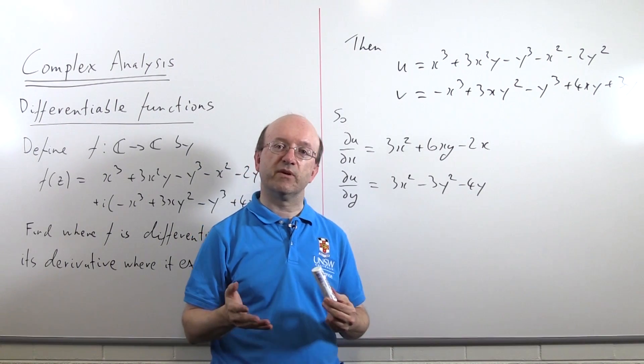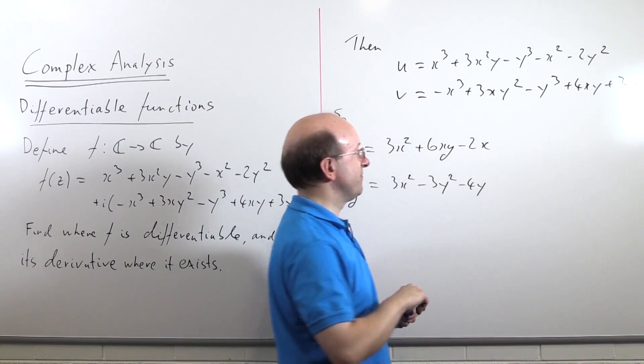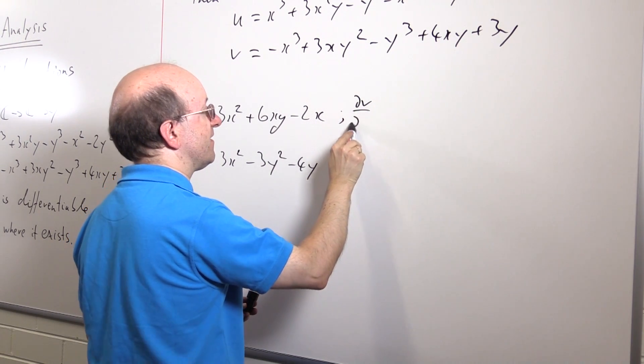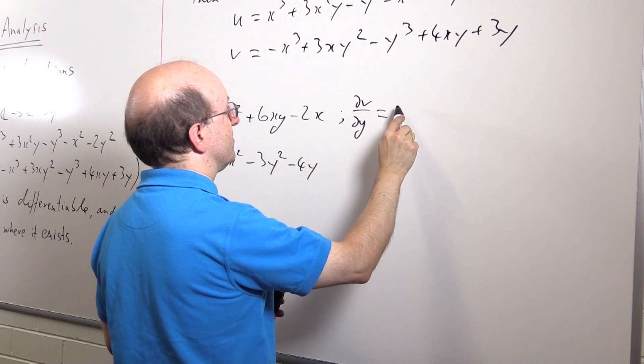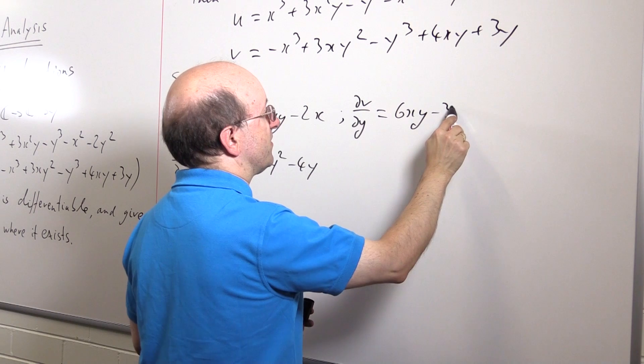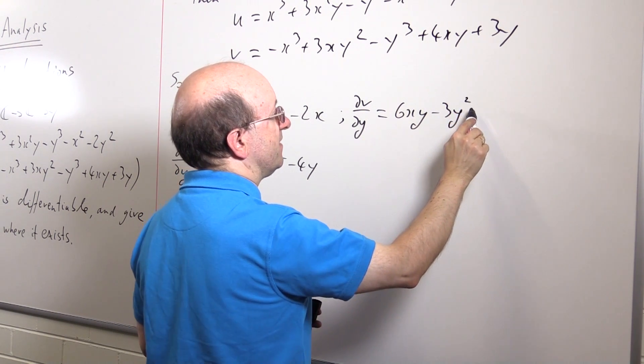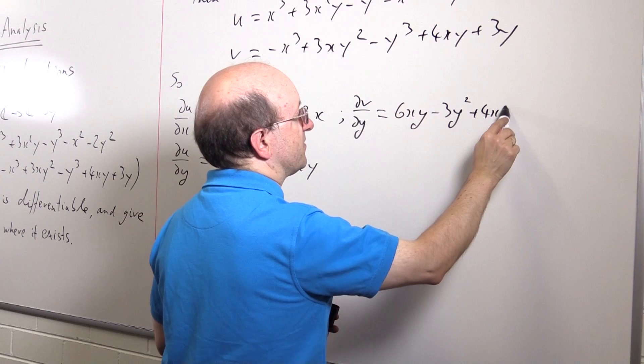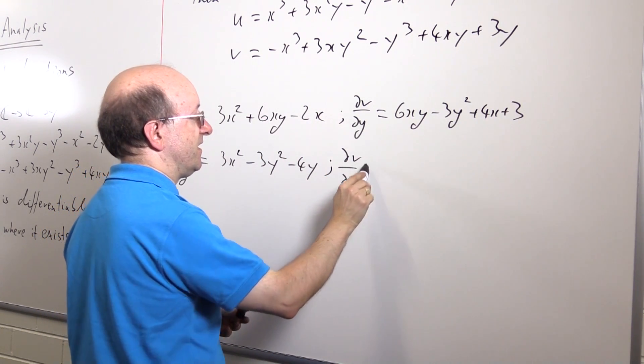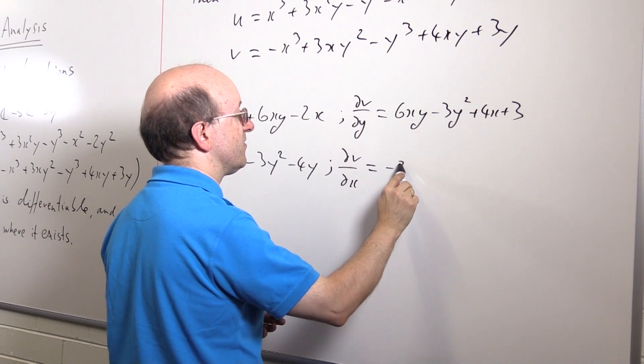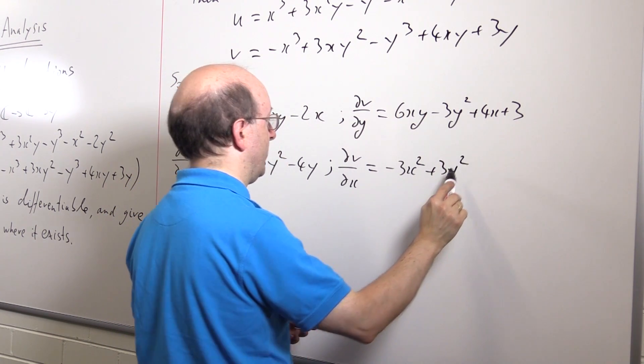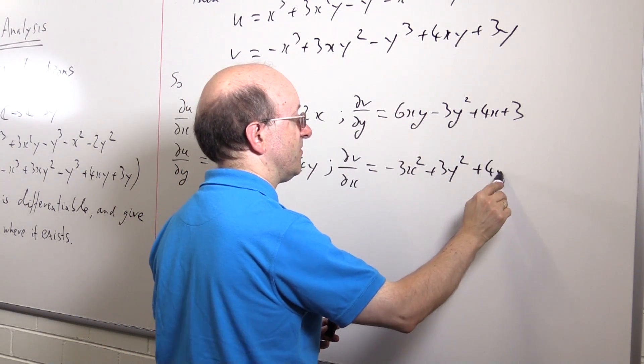And next to it we'll put the other Cauchy-Riemann equations, but in the other order, so that we can compare them more easily. dv dy is going to be 6xy minus 3y squared plus 4x plus 3. And dv dx is minus 3x squared plus 3y squared plus 4y.